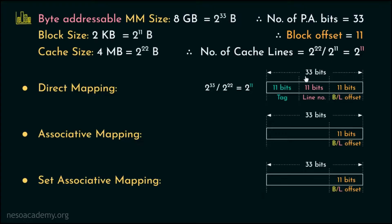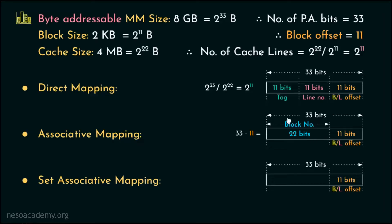So from the 33-bit physical address, 11 most significant bits will be used for the tag, 11 bits for the line number, and 11 least significant bits for the block or line offset. Now coming to associative mapping, the entire block number will need 33 minus 11, that is 22 bits. Since there are no restrictions on placing main memory blocks into cache lines, the entire 22 block number bits will be used for the tags.